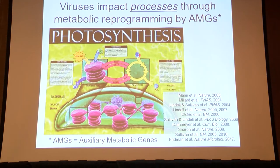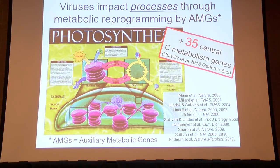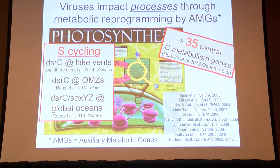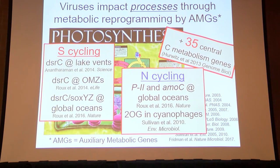Could that be a more generalizable phenomenon? These are called auxiliary metabolic genes. In an early dataset, Bonnie Hurwitz had found 35 stolen auxiliary metabolic genes in viruses related to central carbon metabolism — no one virus has all these genes, and they're tuned to whatever metabolic bottleneck exists in that host. There are also sulfur cycling genes found throughout surface ocean waters as well as near hydrothermal vents, and genes involved in global regulation and nitrogen storage compounds with respect to nitrogen cycling.